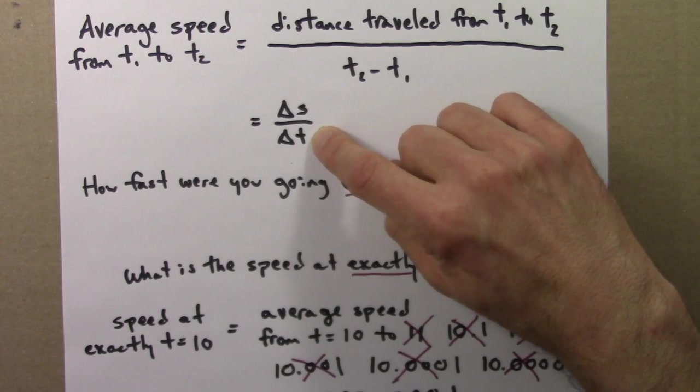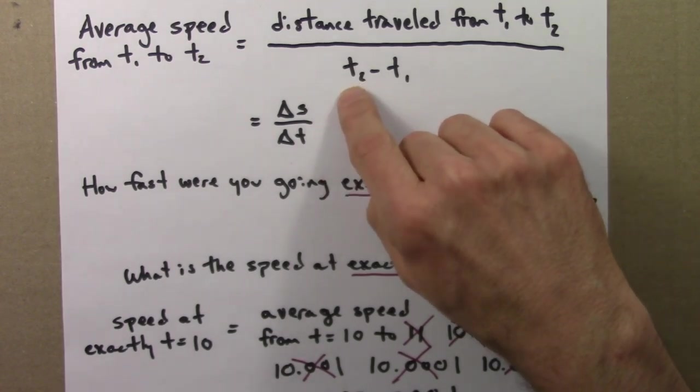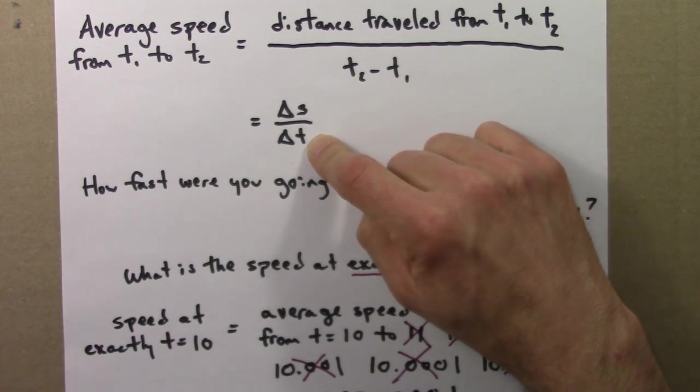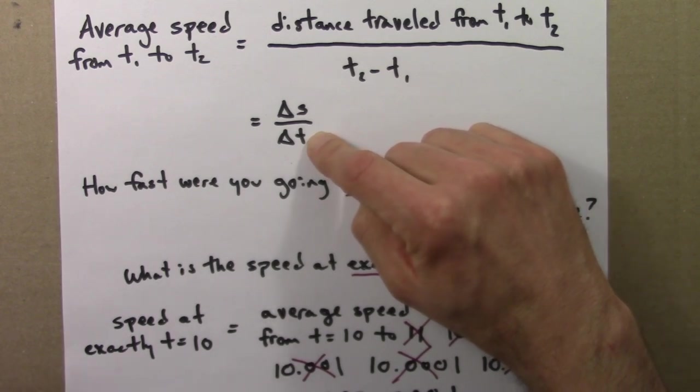We'd like delta t to be 0, so the only t we're dealing with is t equals 10. But we can't have delta t be 0 because division by 0 leads to a quantity that diverges, is not defined, just doesn't make sense.